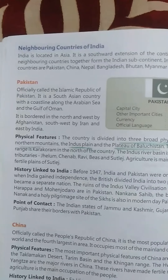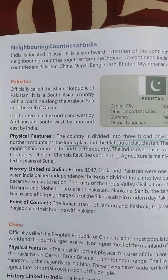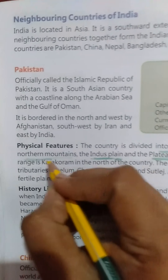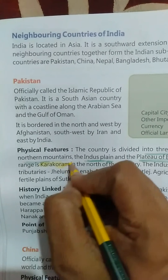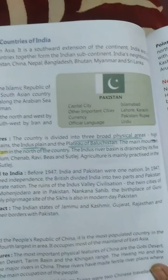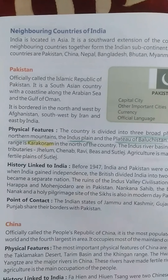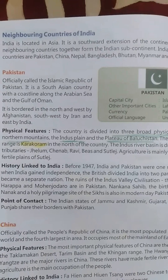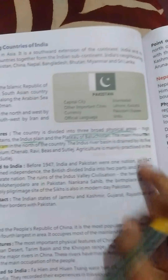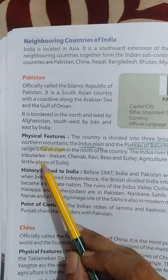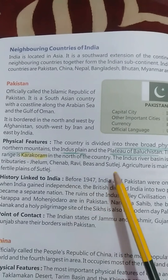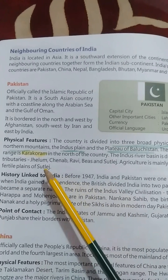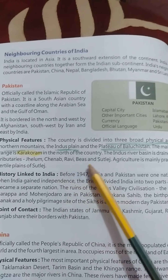The main mountain range is Karakoram in the north of the country — you can highlight this with a highlighter or pencil color. The Indus river basin is drained by its five tributaries: Jehlam, Chenab, Ravi, Beas, and Sutlej.